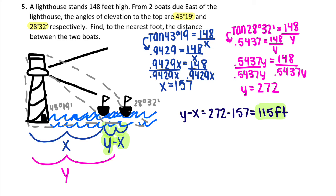Now that you found both x and y, which are the two elevations, let's find the distance between the two boats. You're doing y minus x, which is 272 subtracted by 157, and you get 115 feet and that is your final answer.